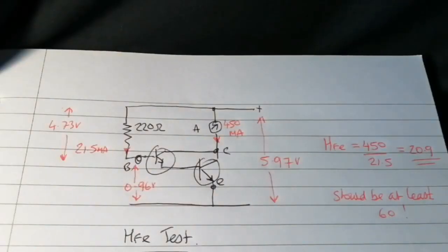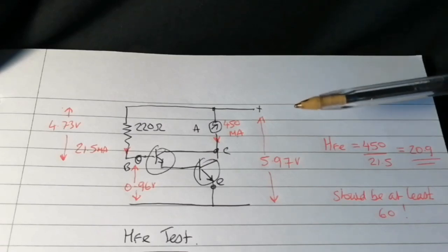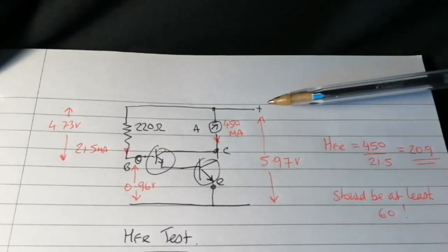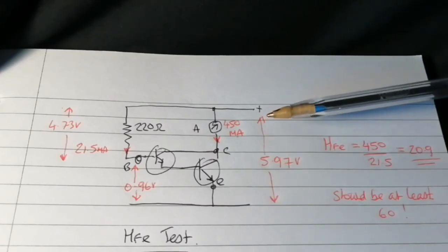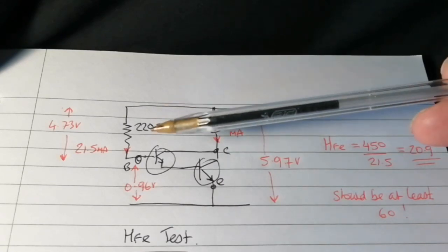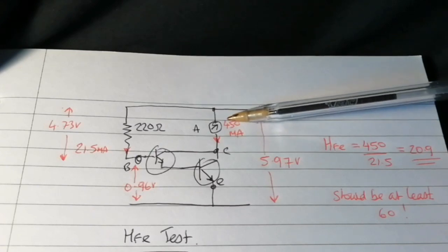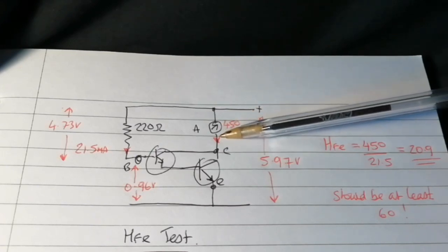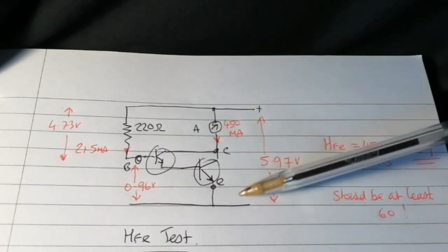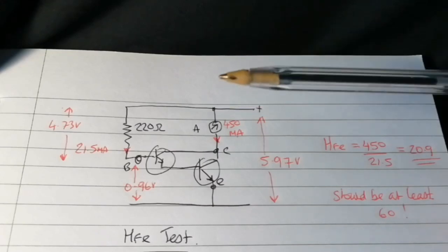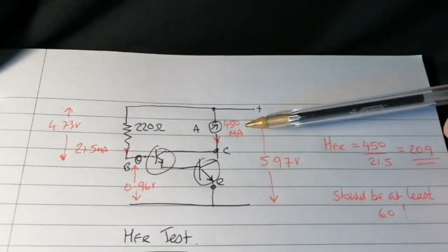By now I was convinced it was a fake, but I set up a simple HFE test. It was supposed to be at least 60 at 6V. So I set up a test with 220Ω on the base and an ammeter in the collector, 6V or thereabouts. And I got 450mA.